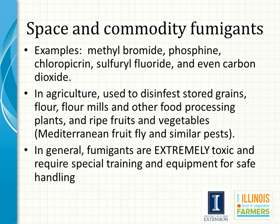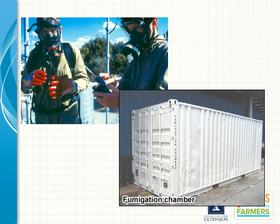Fumigants, in addition to those used in soil fumigation, may be used to disinfest stored grains, flour mills, and ripe fruits and vegetables. Common fumigants include methyl bromide, phosphine, chloropicrin, sulfuryl fluoride, and even carbon dioxide. Fumigants are highly toxic, and applicators that apply them must be specifically trained and licensed to do so. Gas detection and monitoring devices and self-contained breathing units are commonly required. Fumigation is a professional's job, not a small fruit and vegetable producer's job.